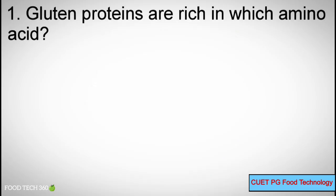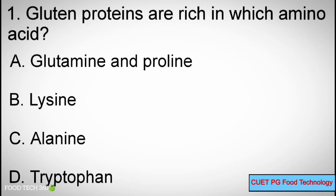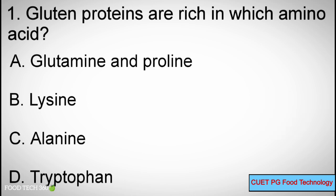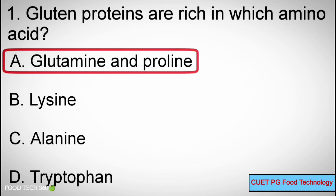Q1: Gluten proteins are rich in which amino acids? A. Glutamine and Proline, B. Lysine, C. Alanine, D. Tryptophan. Correct answer: A. Glutamine and Proline.